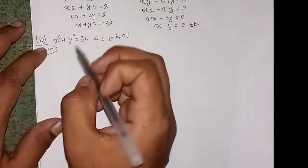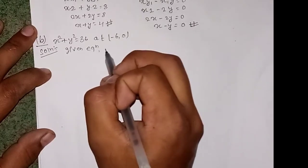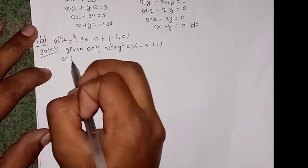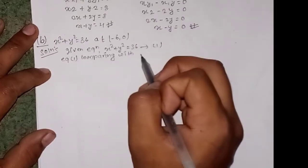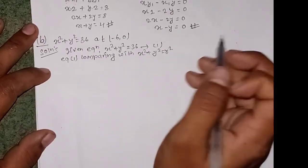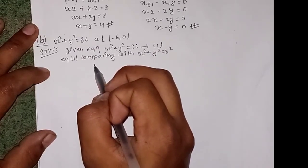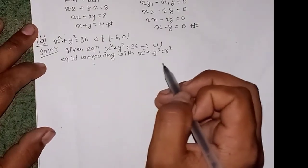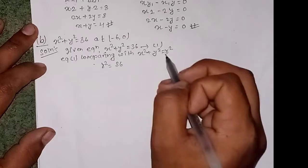Given equation: x² + y² = 36 — equation 1. Comparing with x² + y² = r², so r² = 36. The point is (-6, 0), so x₁ = -6 and y₁ = 0.